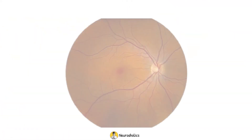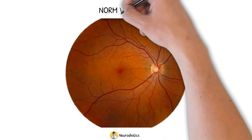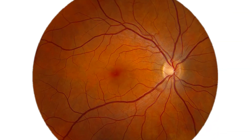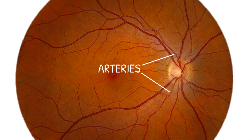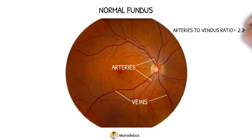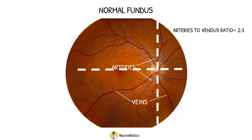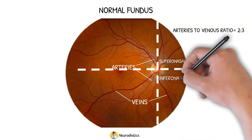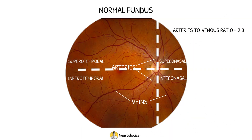In a normal fundus, you also need to evaluate the vessels. The arteries appear bright red compared to veins, which are slightly purple and darker. The arterial to venous ratio is about 2 to 3. Arteries are narrower and thinner than veins. Veins usually have pulsation. The vessels are divided into four quadrants: superonasal, inferonasal, superotemporal, and inferotemporal.